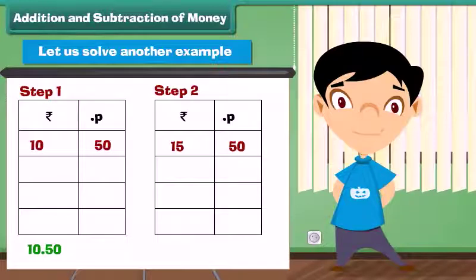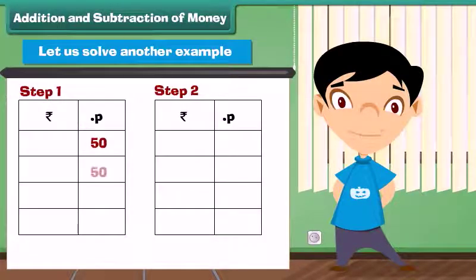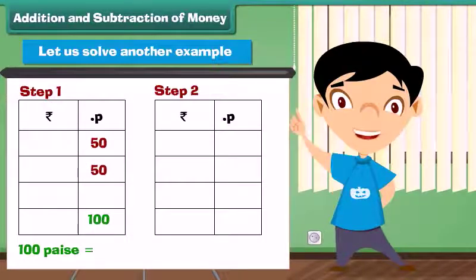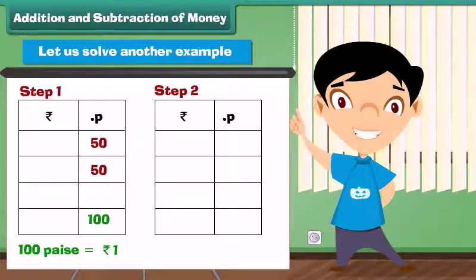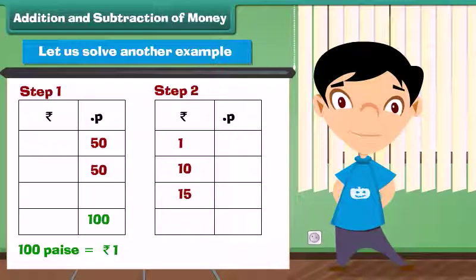Step 1: Write the numbers in the correct column. Step 2: Add the numbers in the paise column — 50 plus 50 equals 100 paise. But we know that 100 paise is equal to 1 rupee, so we write 00 below the paise column and take 1 as carry. Then add the numbers in the rupees column — 1 plus 10 plus 15 equals 26 rupees. Write 26 under the rupees column.